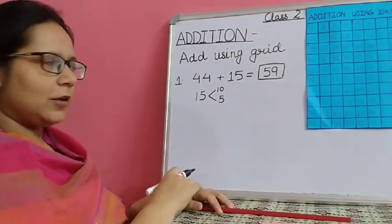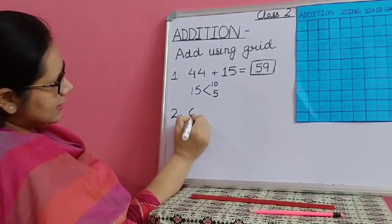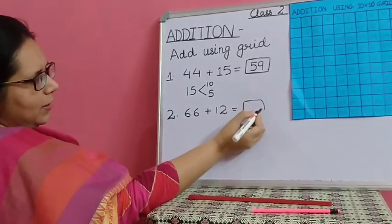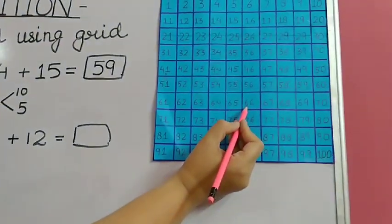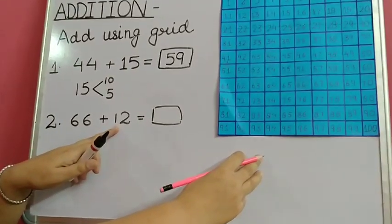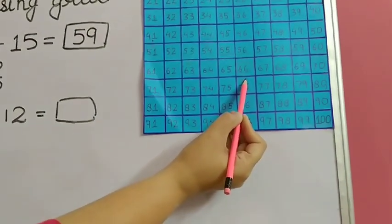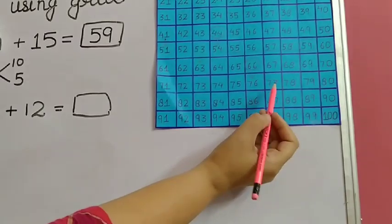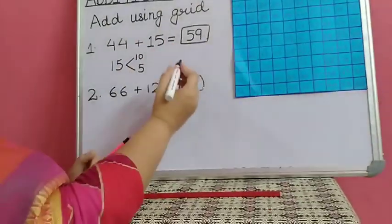Let's try another number: 66 plus 12. Find 66 on the grid. We will do the same thing — split 12 into 10 and 2. First add 10 by moving 1 row below: 66 plus 10 is 76. Now we have to add 2 more, so we move 2 numbers forward. 78 is the answer.